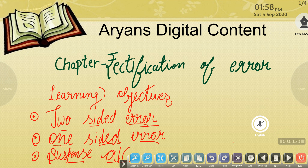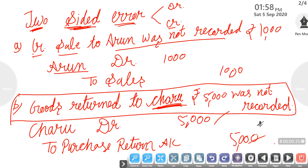We will start with our first topic, which is two-sided error. You all know that we follow the double entry system in accounts. In the double entry system, there are two entries — one is debit and one is credit — and both accounts are affected. That means whichever account you debit, you will definitely credit another.